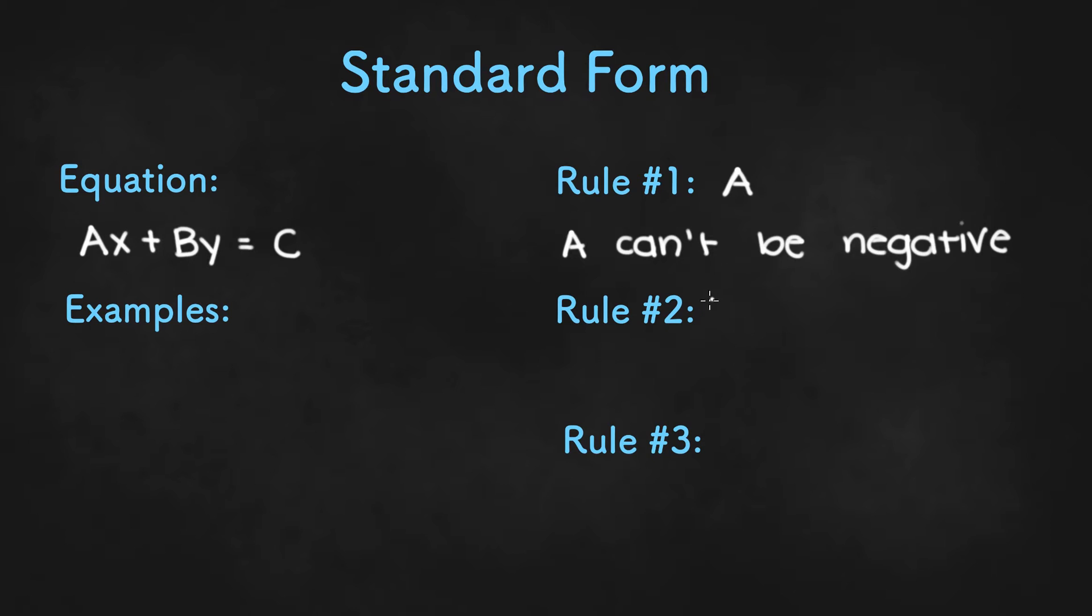Now rule number two has to do with A and B and it states that both A and B can't be 0 at the same time.